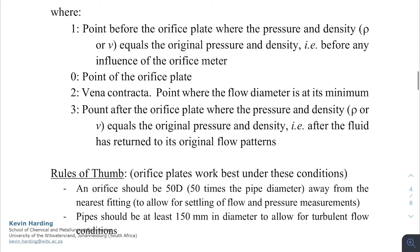For each of those points: point 1 is before the orifice plate, point O is the orifice plate itself, point 2 is the vena contracta, and point 3 is after the orifice plate where the pressure and density return to their original values. As a rule of thumb, orifice plates generally work best if they are 50 diameters away from any other fitting such as a bend or valve. In general, the pipe should be at least 150 millimeters in diameter to allow for the turbulent flow conditions that the orifice plate requires.